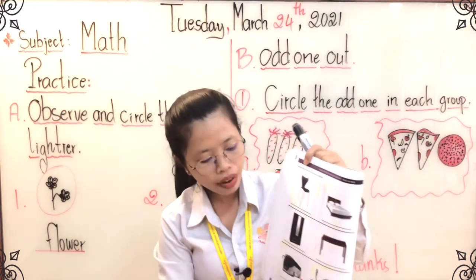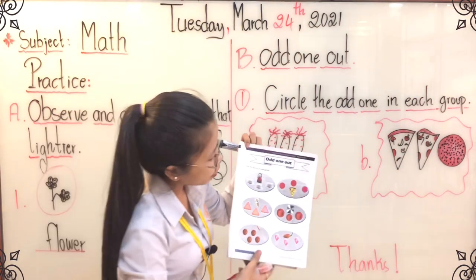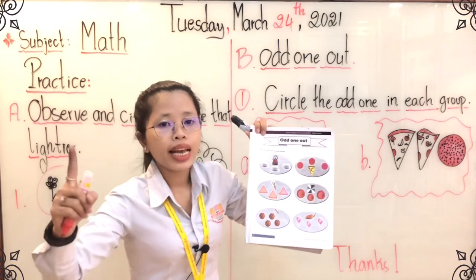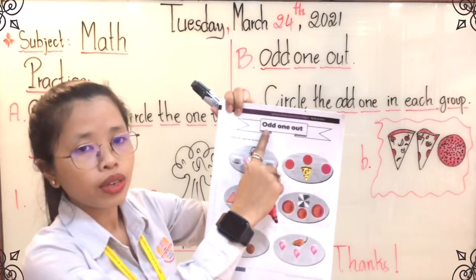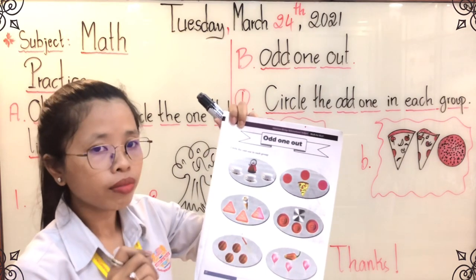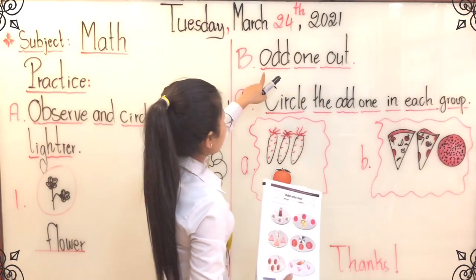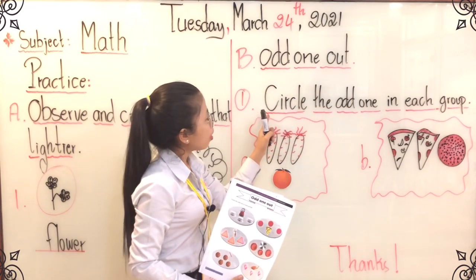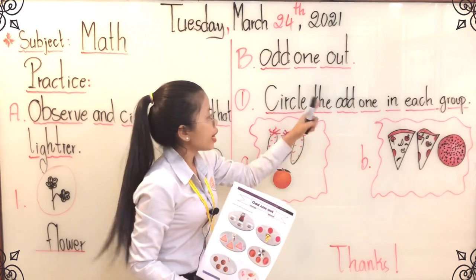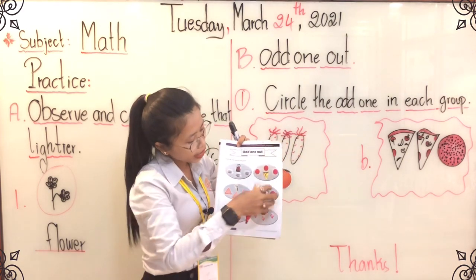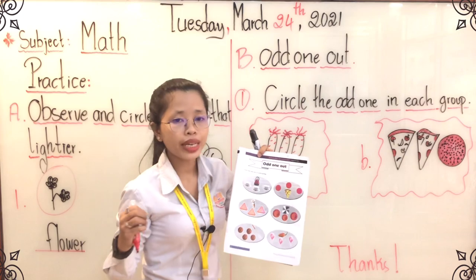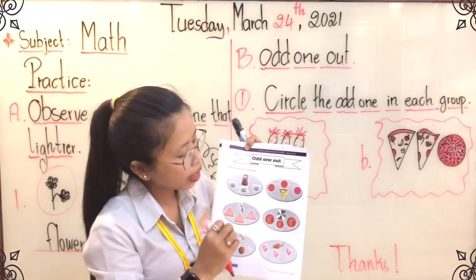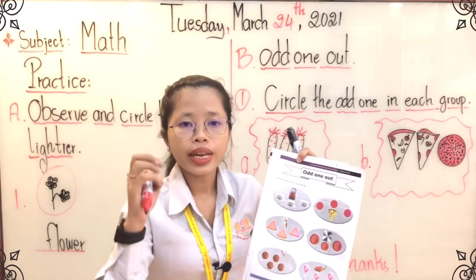So after we have done that activity, let's move to the next activity for today. You can also see one new activity. The activity is 'odd one out.' What we have to do is circle the odd one out in each group of pictures. We can see different groups of pictures, so we have to do the observation and look at all the pictures and then consider.